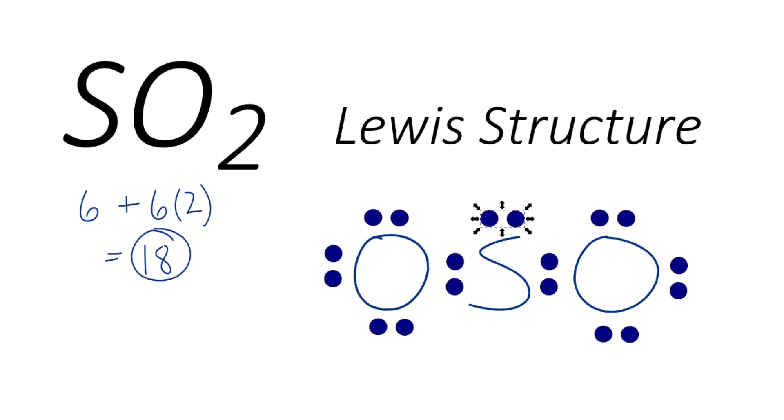Oxygens, they have octets. Sulfur, almost. So we could just form a double bond. We could take this pair of electrons, move it here, and now this oxygen has eight. Sulfur has eight. Oxygen has eight, and this is a valid Lewis structure. And you might think you're done,